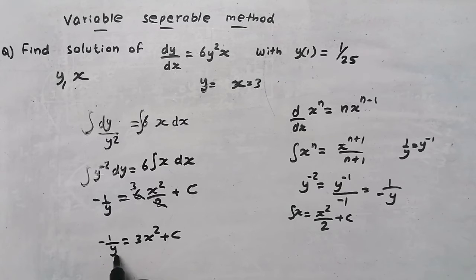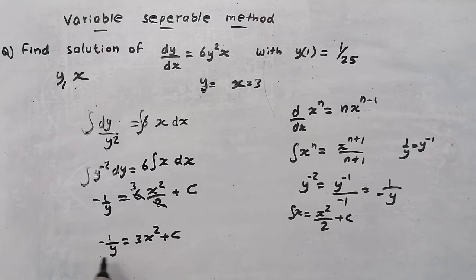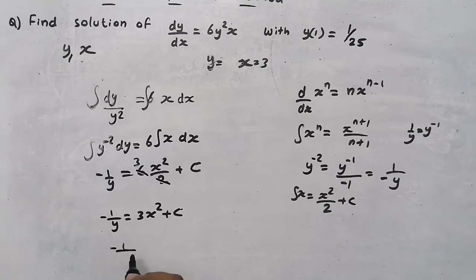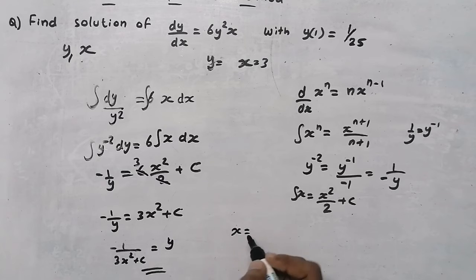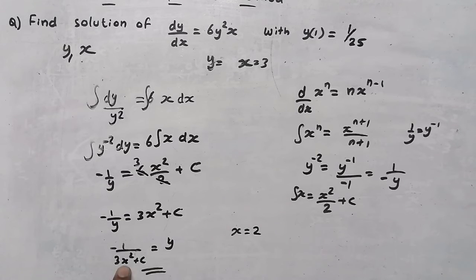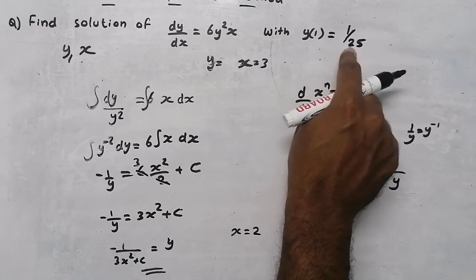Now I can write this in the form of y. Moving y across and the rest to the other side gives: y equals minus 1 divided by (3x squared plus c). I now have an equation for y, but there is still the constant c. If someone asks me to find y when x equals 2, I can substitute, but I need to remove c first.